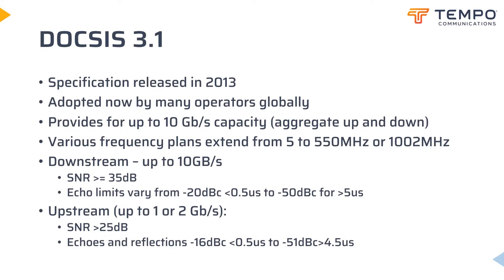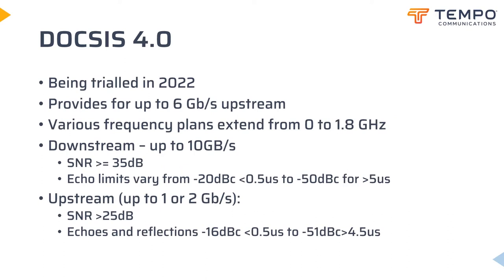DOCSIS 3.1 built upon the earlier DOCSIS 3 and uses the same encoding scheme: single carrier quadrature amplitude modulation, SCQAM. Each channel is either 6 MHz in North America or 8 MHz in Europe. By combining a suitable set of channels upstream from the customer and downstream from the node, each customer can be provided with sufficient data bandwidth to carry both TV streams and broadband internet connections. DOCSIS 4 is an upgrade of the existing 3.1 spec that allows for greater upstream capacity, and the signaling formats and signal integrity requirements remain the same as for DOCSIS 3.1, but bandwidth now extends up to 1.8 GHz.